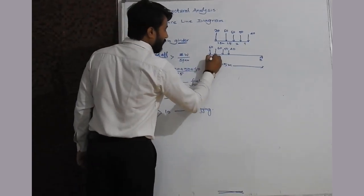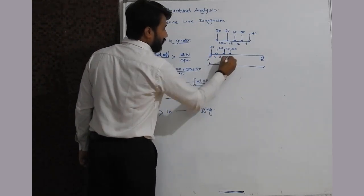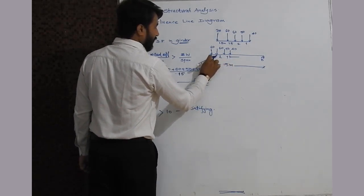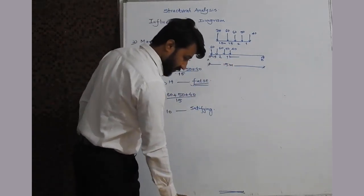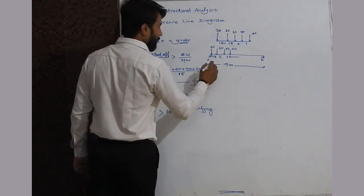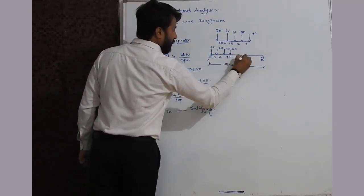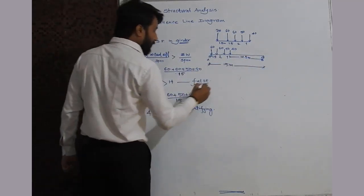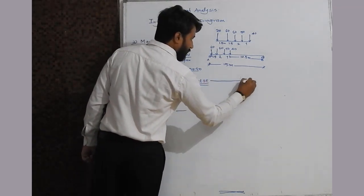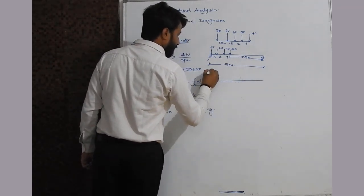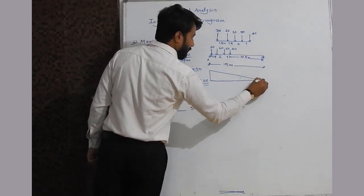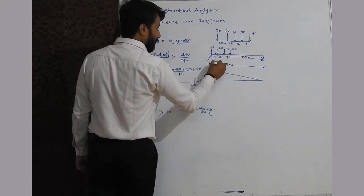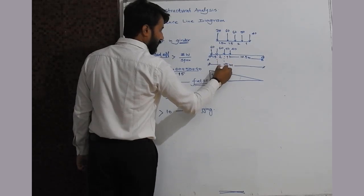The distances between loads are 1.5, 2, and 1 meter, giving a total occupied length of 4.5 meters. The remaining distance from the last load to support B is 15 minus 4.5, which equals 10.5 meters. We now draw the influence line diagram for RA. At support A, the ordinate of the influence line for RA is 1.